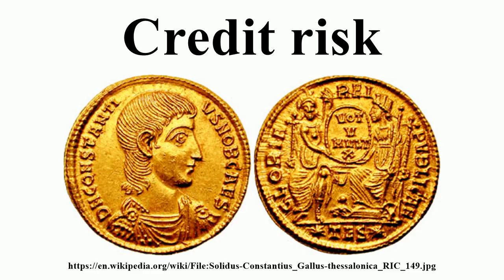Mitigating credit risk: Lenders mitigate credit risk in a number of ways, including risk-based pricing. Lenders may charge a higher interest rate to borrowers who are more likely to default, a practice called risk-based pricing. Lenders consider factors relating to the loan such as loan purpose, credit rating, and loan-to-value ratio and estimate the effect on yield. Covenants: Lenders may write stipulations on the borrower, called covenants, into loan agreements, such as periodically reporting its financial condition, refraining from paying dividends, repurchasing shares, borrowing further, or other specific voluntary actions that negatively affect the company's financial position, and repaying the loan in full at the lender's request.